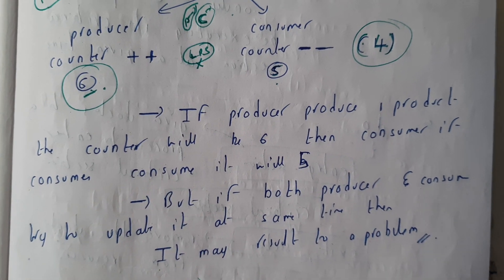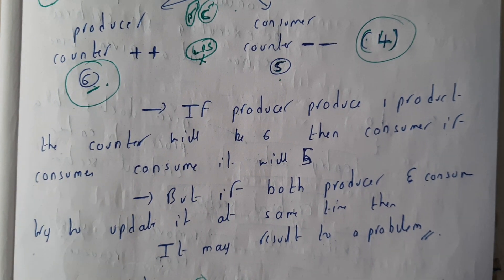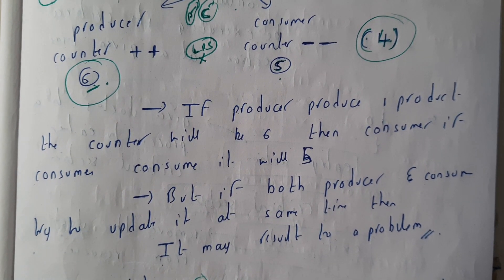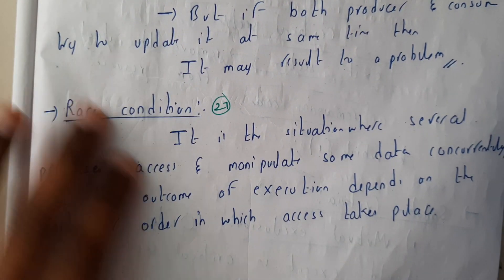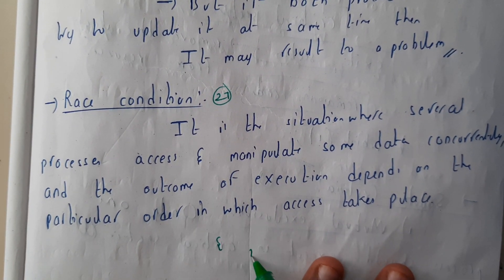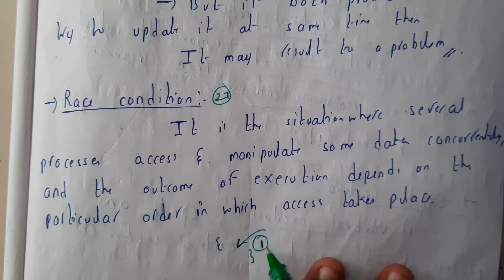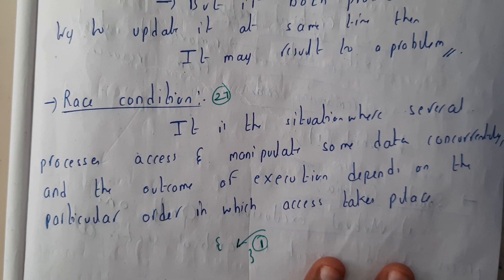For this particular problem, the solution is given by a condition called race condition. Race condition is nothing but it says that there should be a block of code which should be accessed by only one process at a time. That's what it says.